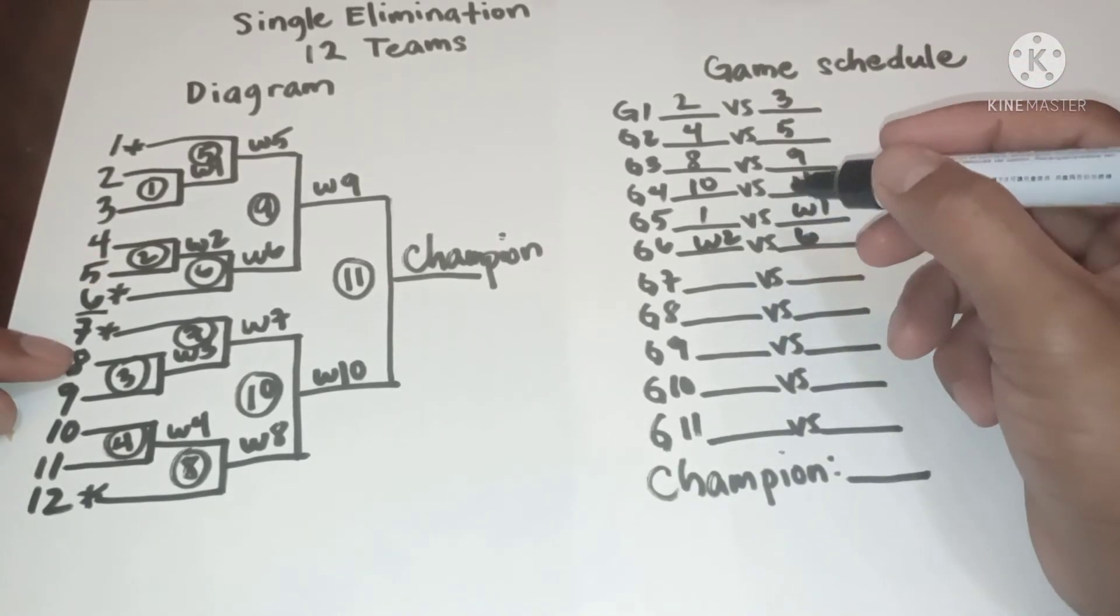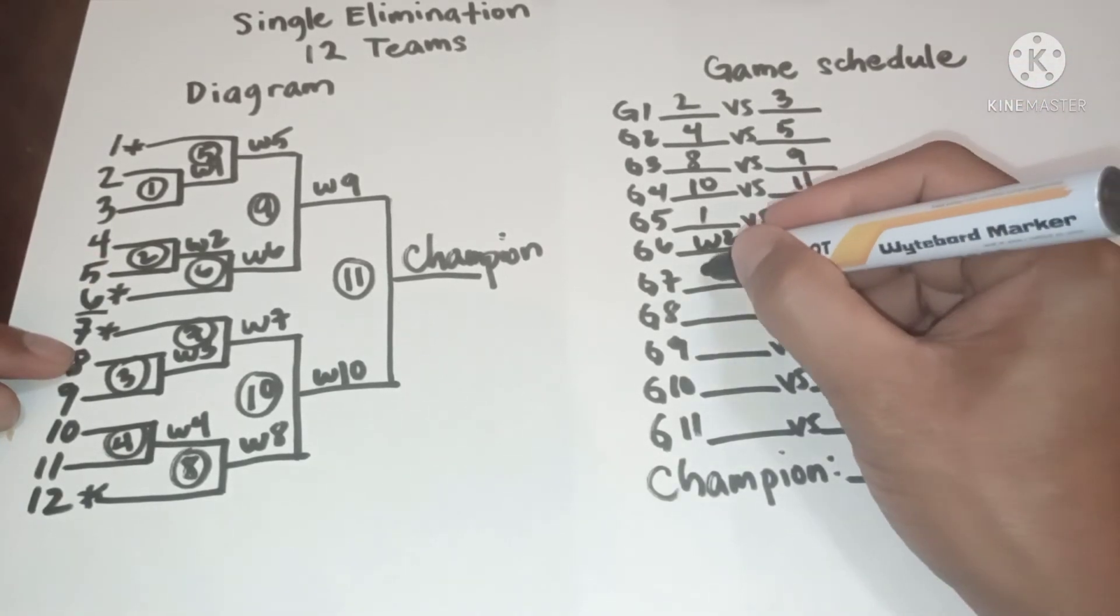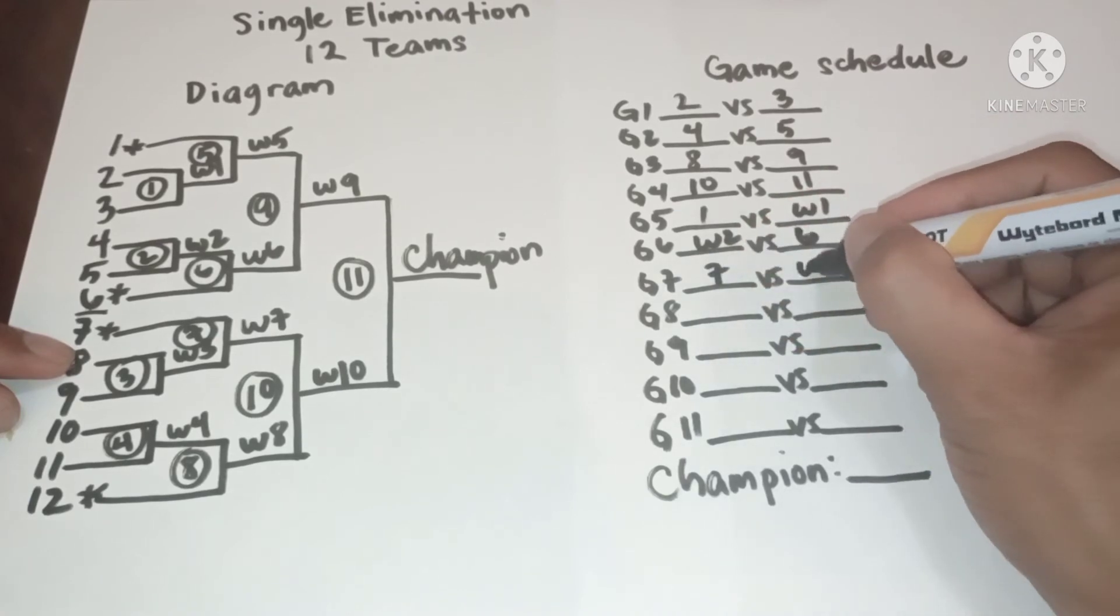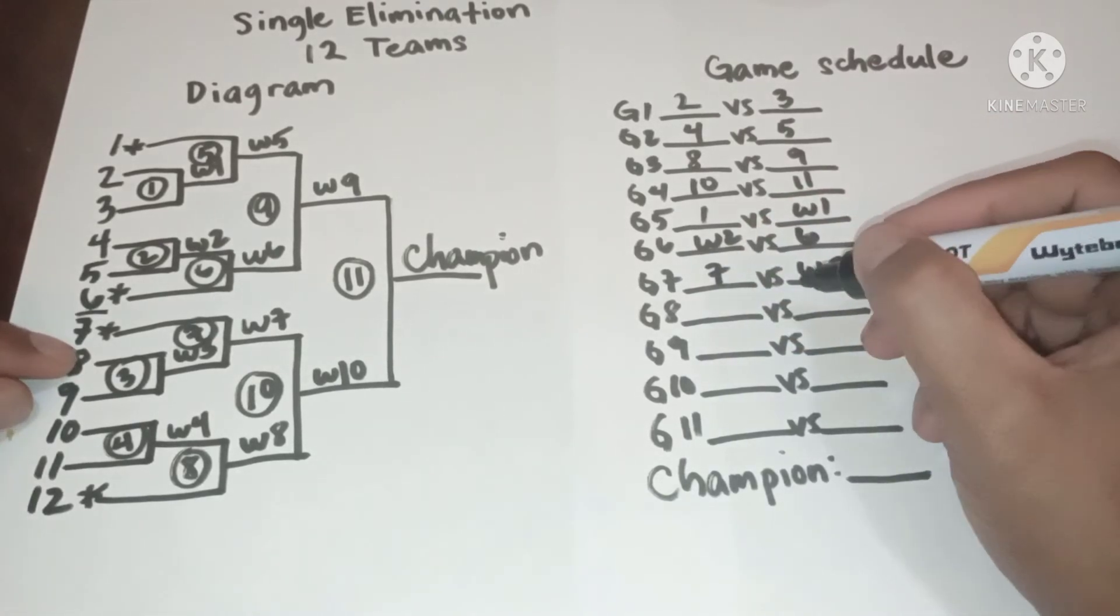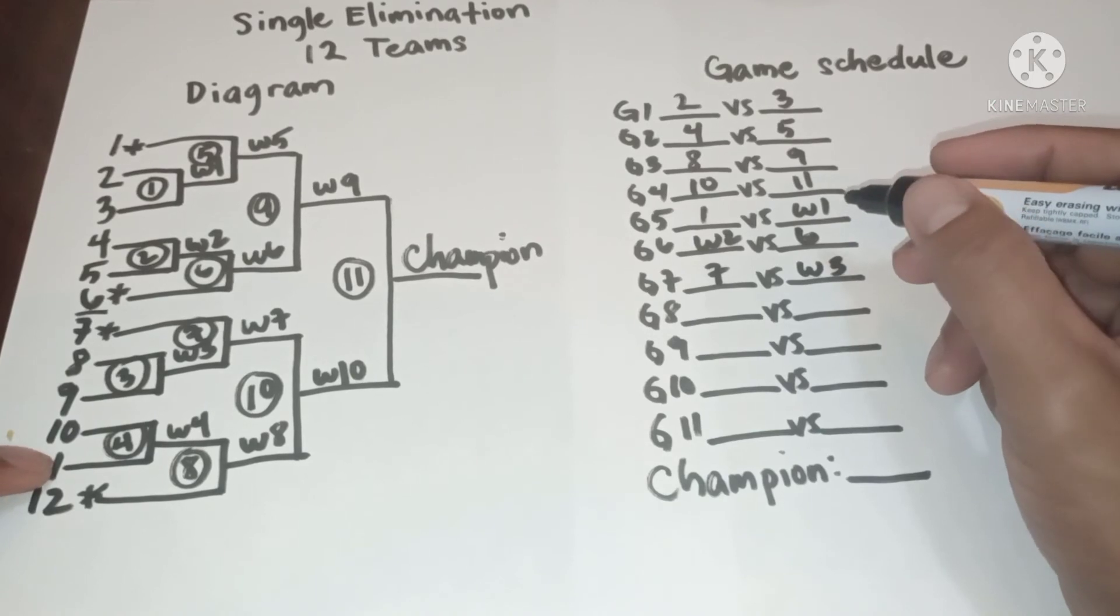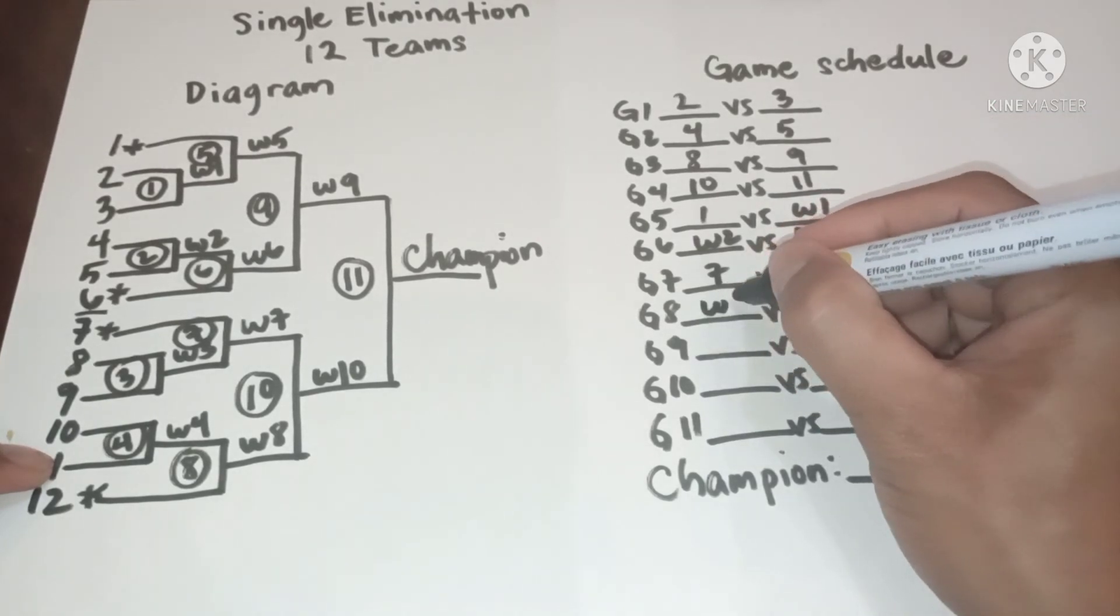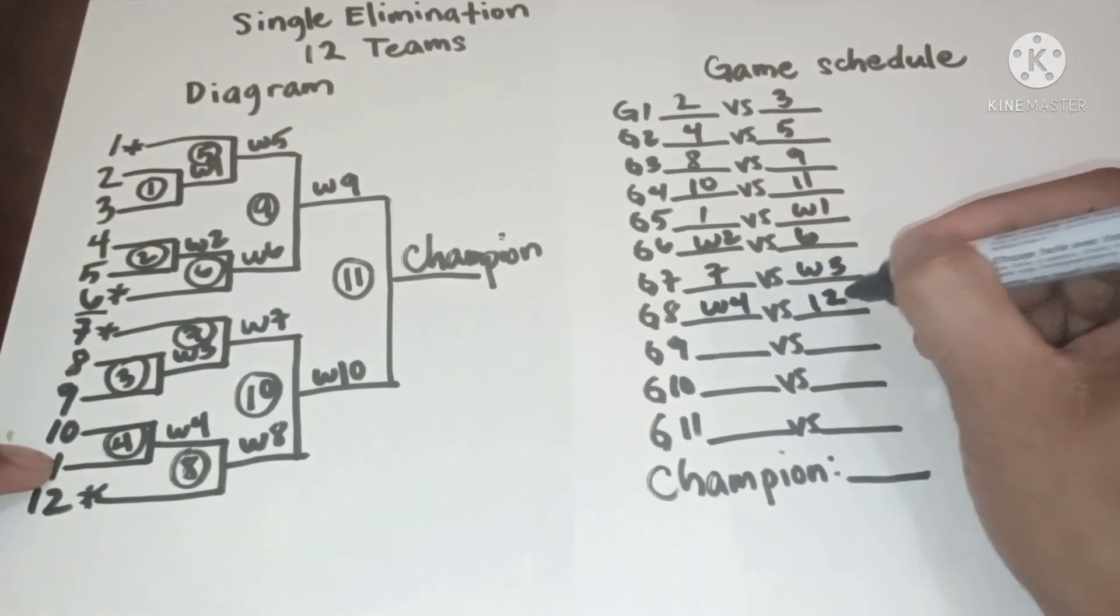In game 7, we have 7 versus winner 3. In game 8, we have winner 4 versus 12.